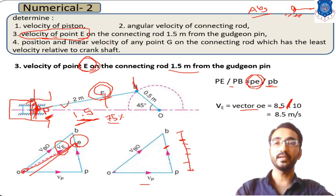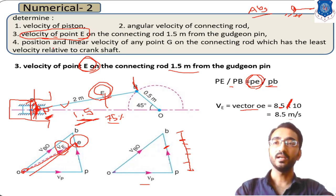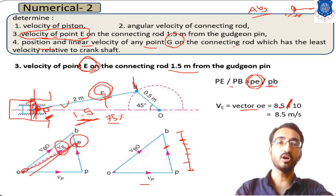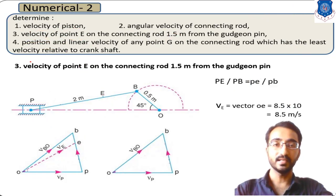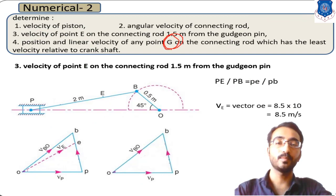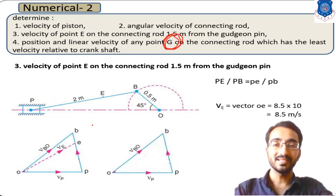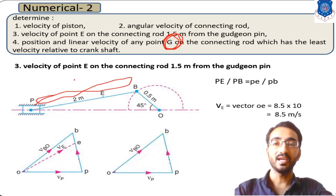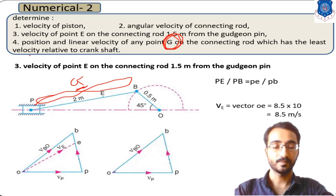In this way you can calculate the velocity of point E. Next, we need to find the position and linear velocity of point G, which is the point on the connecting rod having the least velocity — that is, minimum velocity. We need to identify one specific point G on the entire connecting rod that produces the minimum velocity.